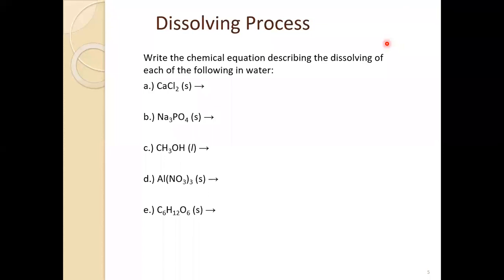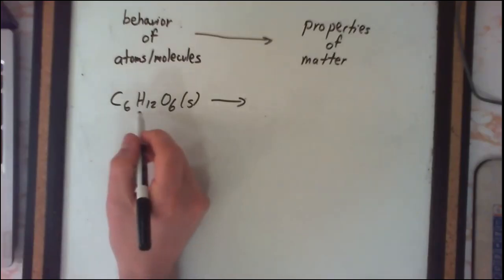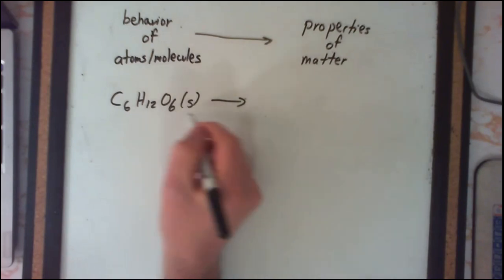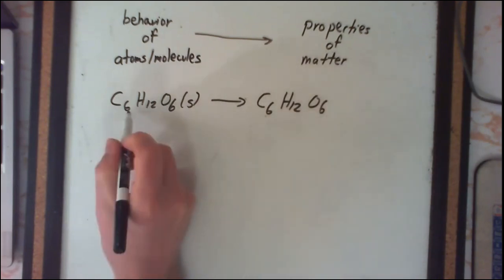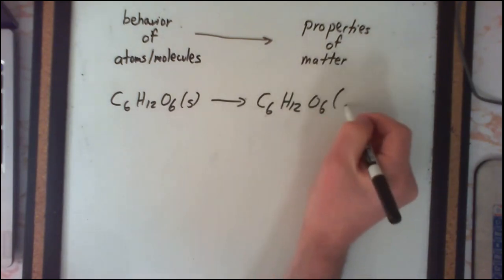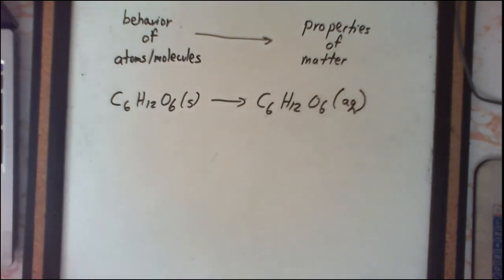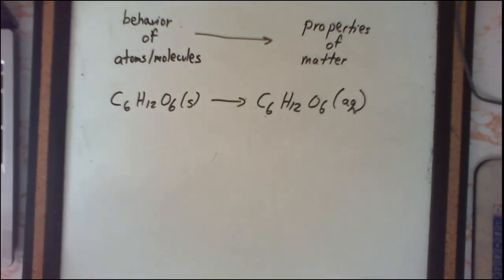The last example is C6H12O6. All non-metal atoms, no metals, no polyatomic ions — so this is a molecular compound. As a molecular compound, C6H12O6 remains intact; individual molecules simply separate from one another. We represent that as C6H12O6 in the aqueous state. As we've seen in this lesson: when ionic compounds dissolve, they break up into their individual cations and anions; whereas when molecular compounds dissolve, individual intact molecules separate from one another.